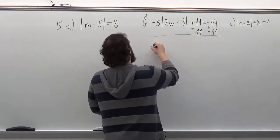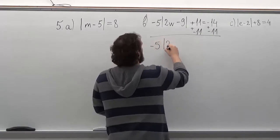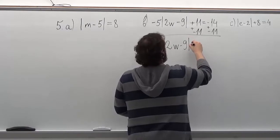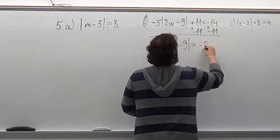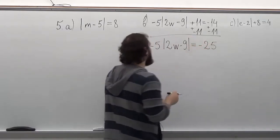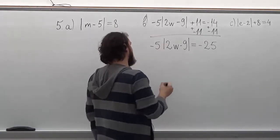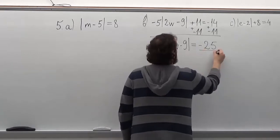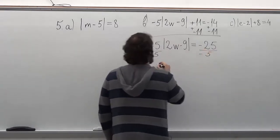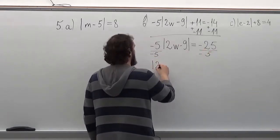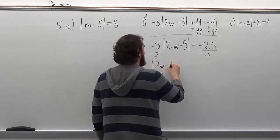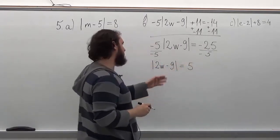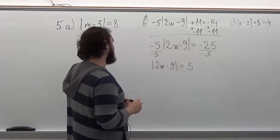What we get will be... And now we can divide both sides by minus 5. Now that we're left with this, we can do the same thing as we did in the first problem.